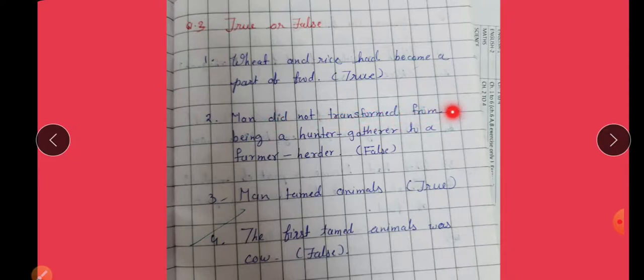Man did not transfer from being a hunter-gatherer to a farmer-herder. False. Man tamed animals. True. The first tamed animal was cow. False.